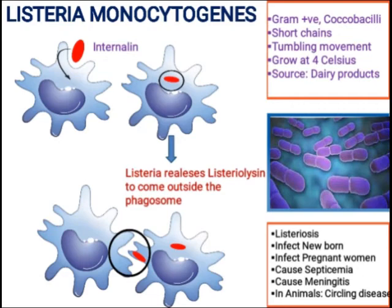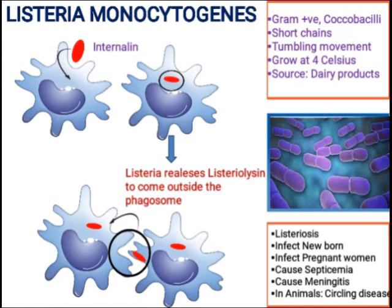This feature is very important — the bacterium goes directly from one cell to another cell, which allows Listeria monocytogenes to avoid antibodies and the complement system. This mechanism of cell-to-cell spread is a key feature of Listeria monocytogenes pathogenicity.